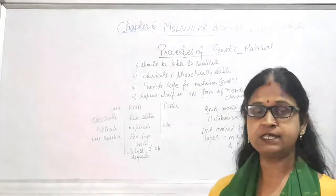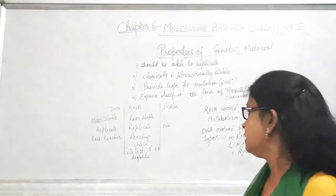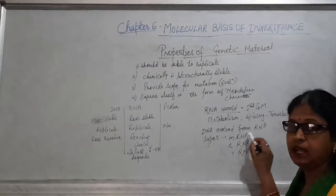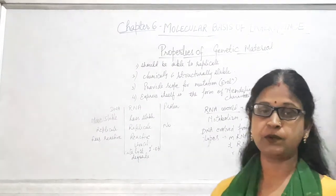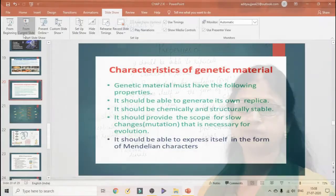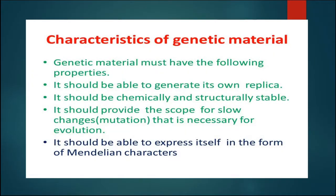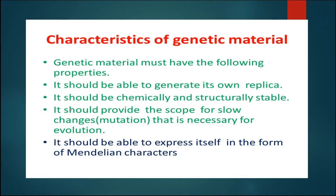There are three types of RNAs: mRNA, rRNA, and tRNA. All three types of RNA help in the process of translation. Inside the nucleus, there are three things — RNA, DNA, and protein — and out of these three, it is clear that the genetic material is DNA.